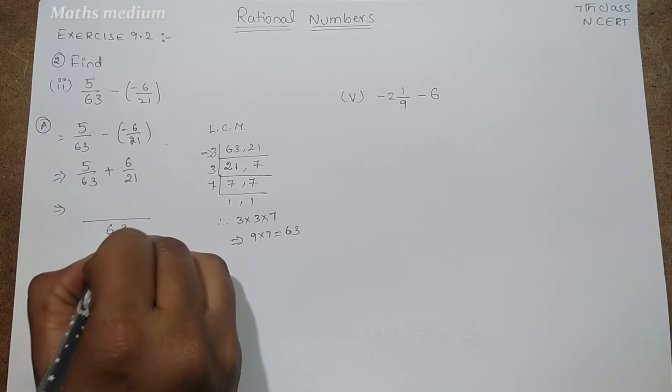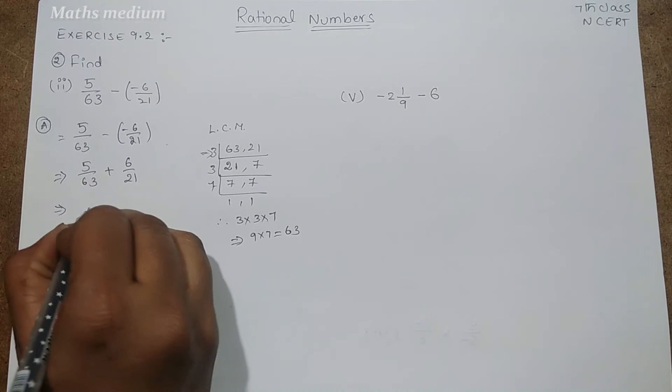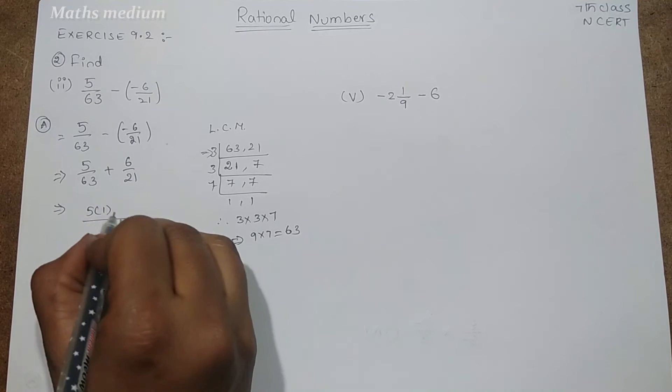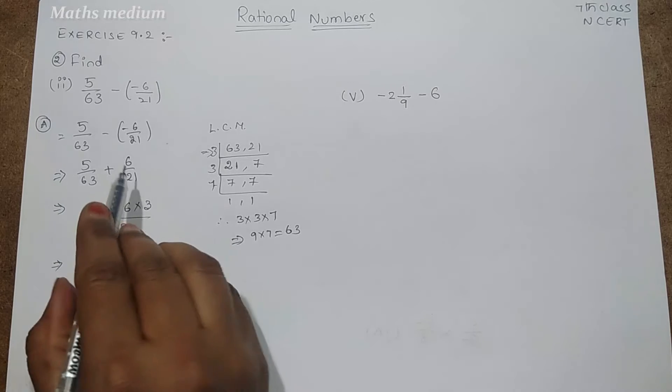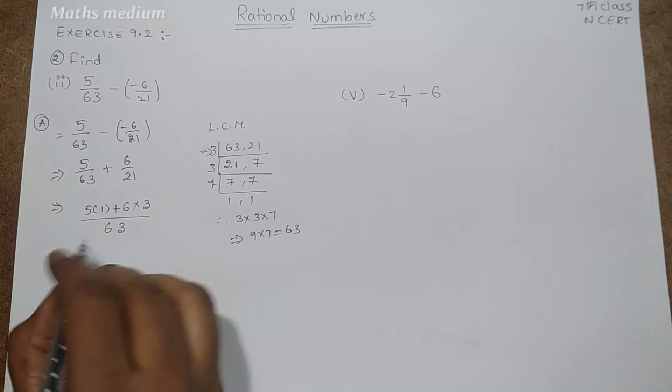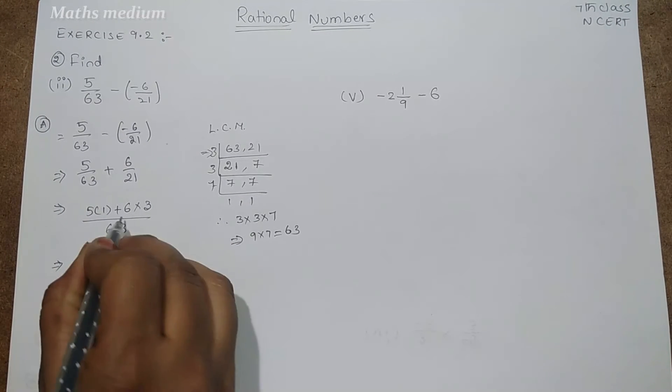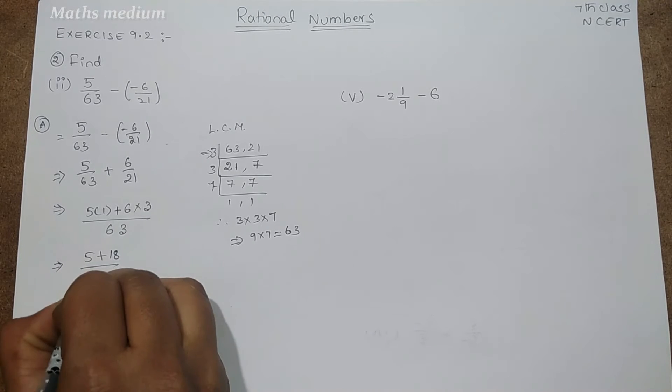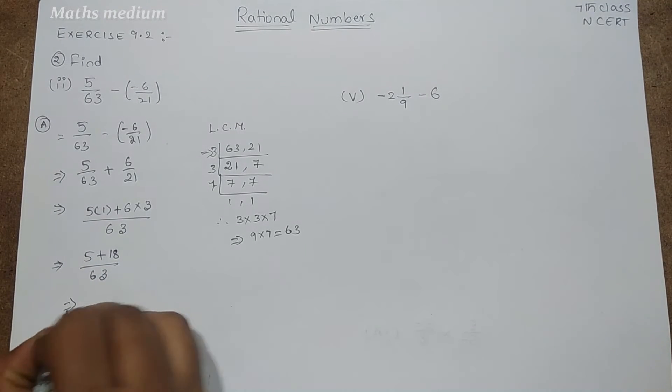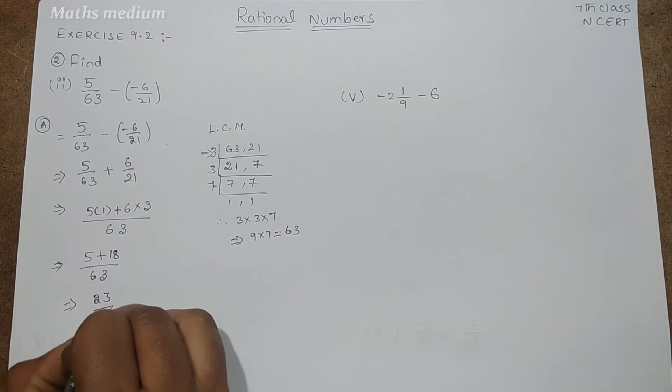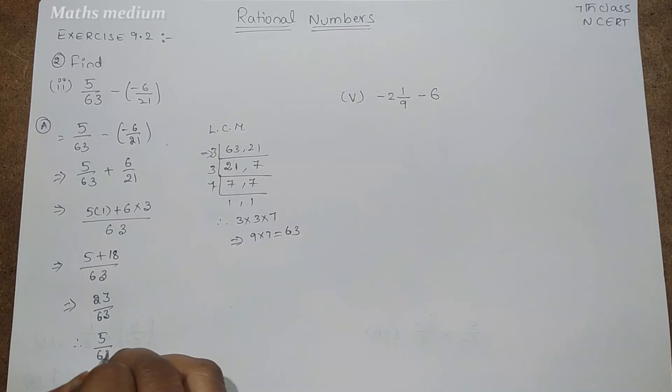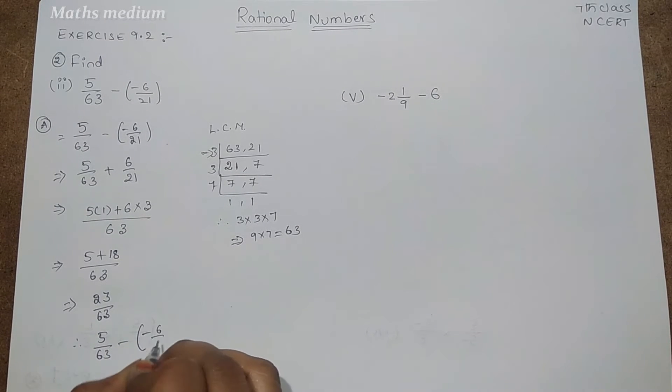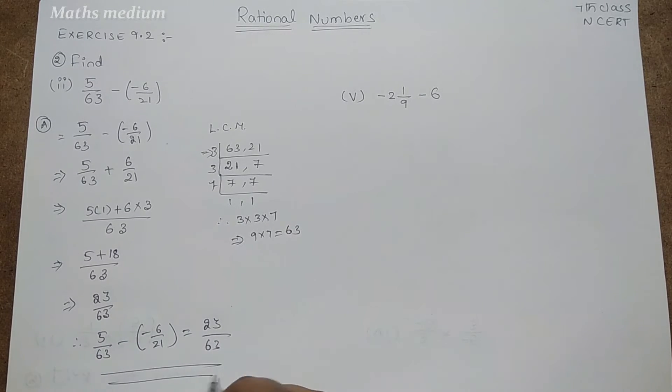So this denominator is 63. Now multiply numerator 5 into 1 plus 6 into 3 because 21 divides 63 into 3 times. So 5 plus 18 is 23 by 63. Therefore 5 by 63 minus of minus 6 by 21 is equal to 23 by 63, the answer.